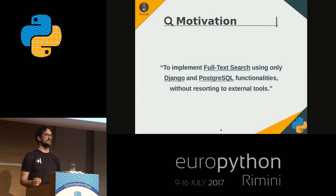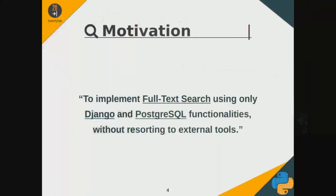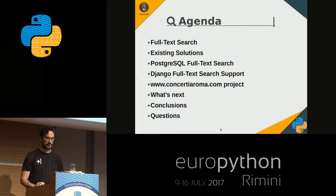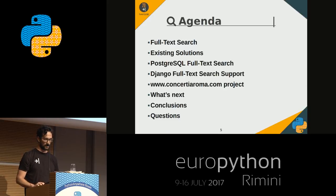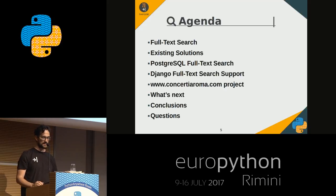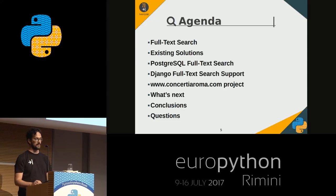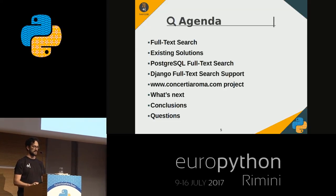The main reason why we used Django and Postgres-based full-text search was because we prefer to implement full-text search without any external tools. These are the main topics of this presentation: full-text search in general, existing solutions for full-text search, full-text search support in Postgres, Django support for full-text search, the project concertiaroma.com, the next innovation in full-text search, some personal conclusions, and any questions after the talk.